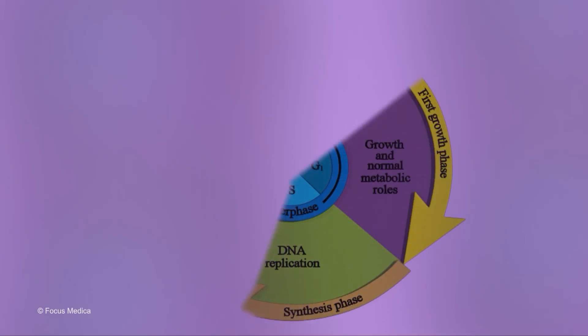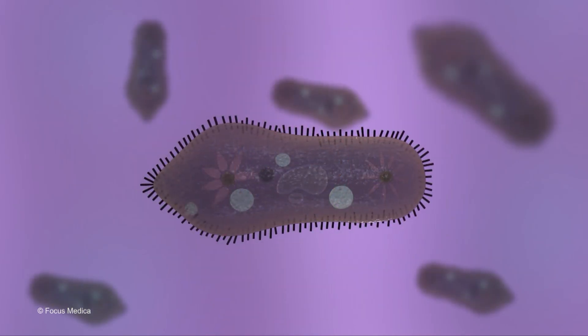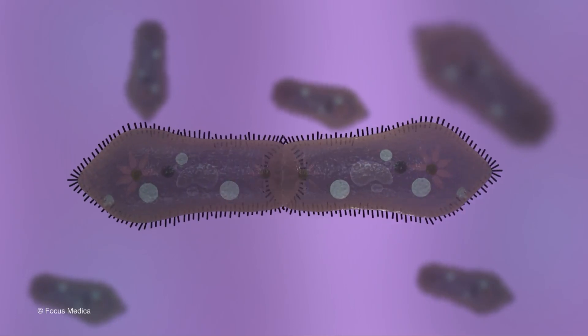Mitosis. Individual cells pass through life cycles, which constitute the cell cycles. In single-celled, or unicellular organisms, cell division leads to reproduction.